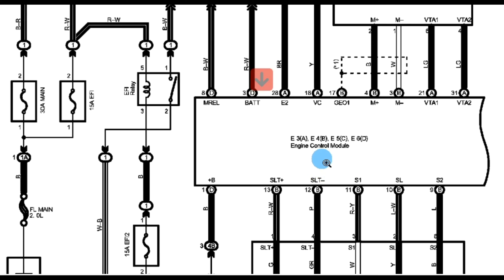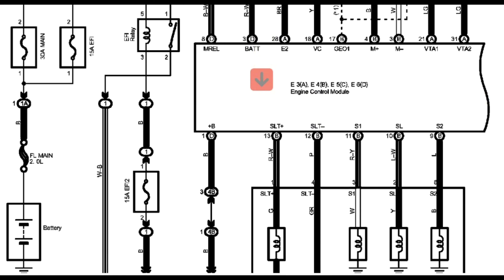Now this is the engine control module here, as you can see. Let's scroll down a little bit. Alright, here are all the solenoids, the shift solenoids. As you can see, these are the number of the pins on the PCM as you can see: 1, 13, 12, 11, 10, and 9. Those are the pins that the PCM uses for all the solenoids, in this case four of them.